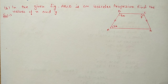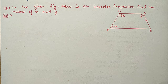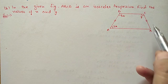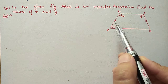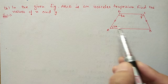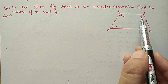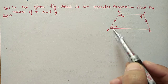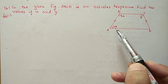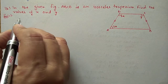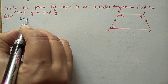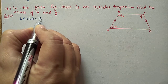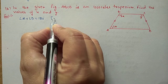Next, part B of this question. In the given figure ABCD is an isosceles trapezium. Find the value of X and Y. Isosceles trapezium means the two non-parallel sides will be equal, and if these two sides are equal then these two angles will be equal. First we will use the co-interior angle property to find the value of X. Angle A plus angle D is equal to 180 degrees, co-interior angles.